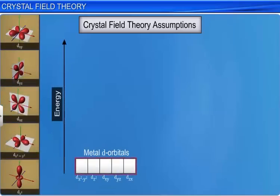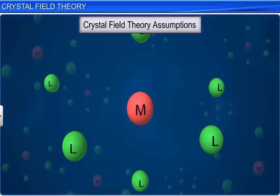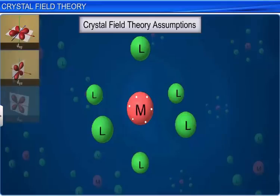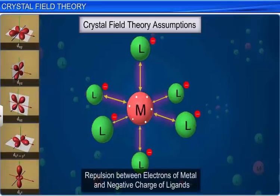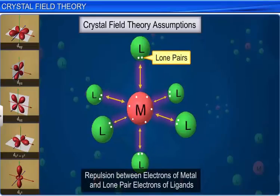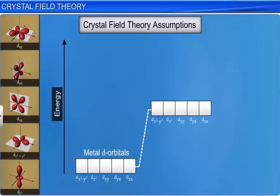The five d-orbitals in an isolated gaseous metal atom or ion are degenerate, that is, they all have the same energy. However, when the ligands approach the metal ion to form a complex, the electrons in the d-orbitals of the metal will be repelled by the negative charge or lone pair electrons of the ligands due to repulsion between like charges. As a result, the energy of the d-orbitals increases and the degeneracy of the d-orbitals is lifted, resulting in the splitting of the d-orbitals.